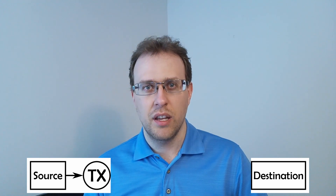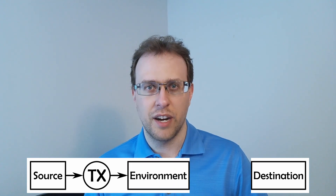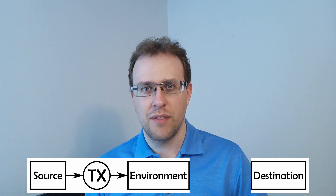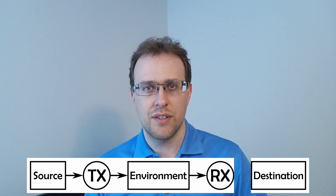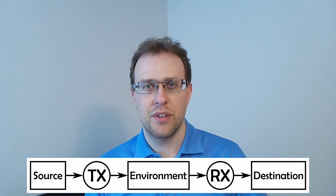Any communication system has five fundamental components. At the two ends are the source and the destination. The source has a message that we need to deliver to the destination. To do this, the source passes its message to a transmitter. The transmitter embeds the message into a signal and transmits the signal into the environment. The environment is the physical space where the signal propagates. The receiver senses the environment to detect the propagating signal and recover the message for the destination.